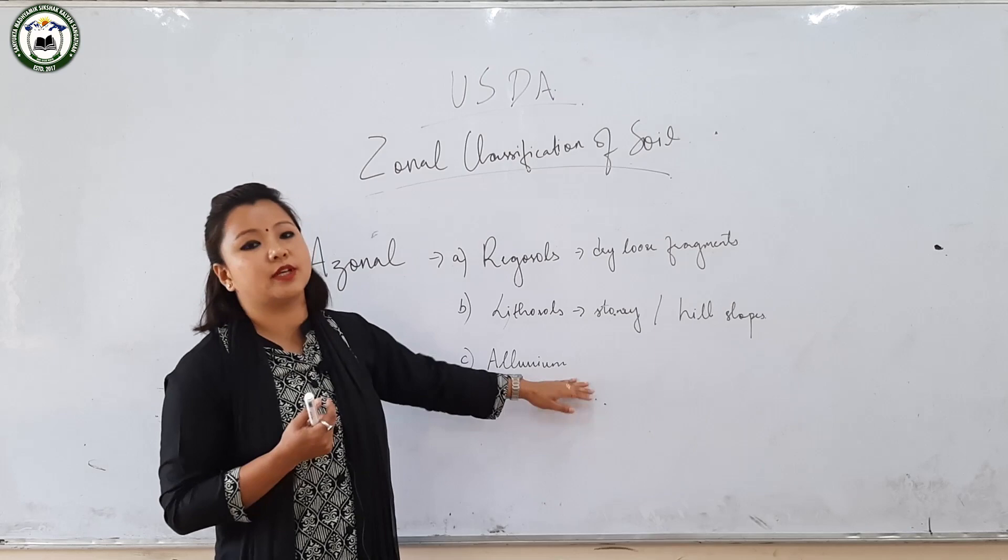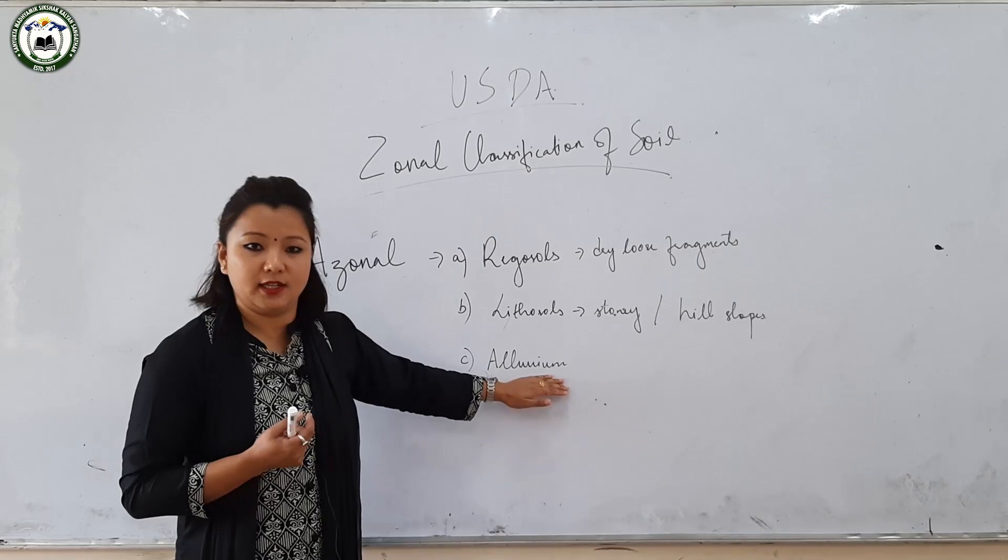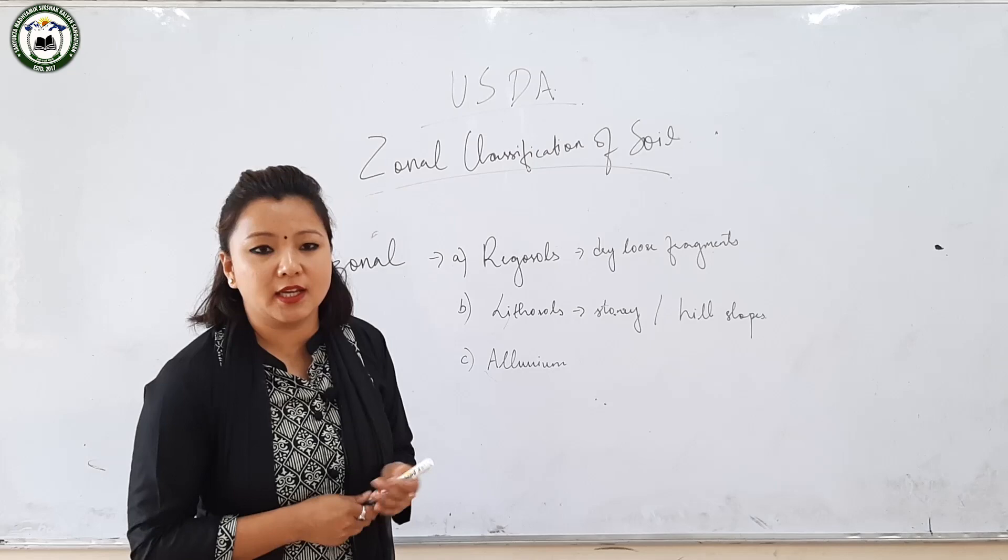Lithosols are formed of stony materials and are profound in hill slopes. The last type is alluvium soil — deposits brought down by rivers, glaciers, and wind — and it is very fertile in nature. With this I have come to the conclusion on the topic of soil. You can go through your text and read about the problems and conservation measures of soil. Thank you very much.